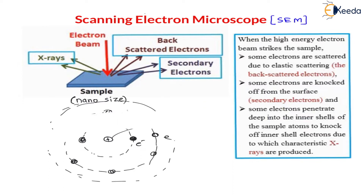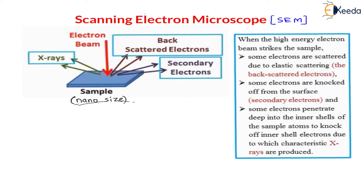So whenever the electron beam strikes on the sample, it produces three forms: backscattered electrons, secondary electrons, and X-rays. All three forms are analyzed with the help of an analyzer. After analyzing the secondary electrons, backscattered electrons, and X-rays, they are magnified and displayed on the monitor. You will see the magnified image of this sample on the monitor. Let us now understand the schematic diagram of this scanning electron microscope ESEM.